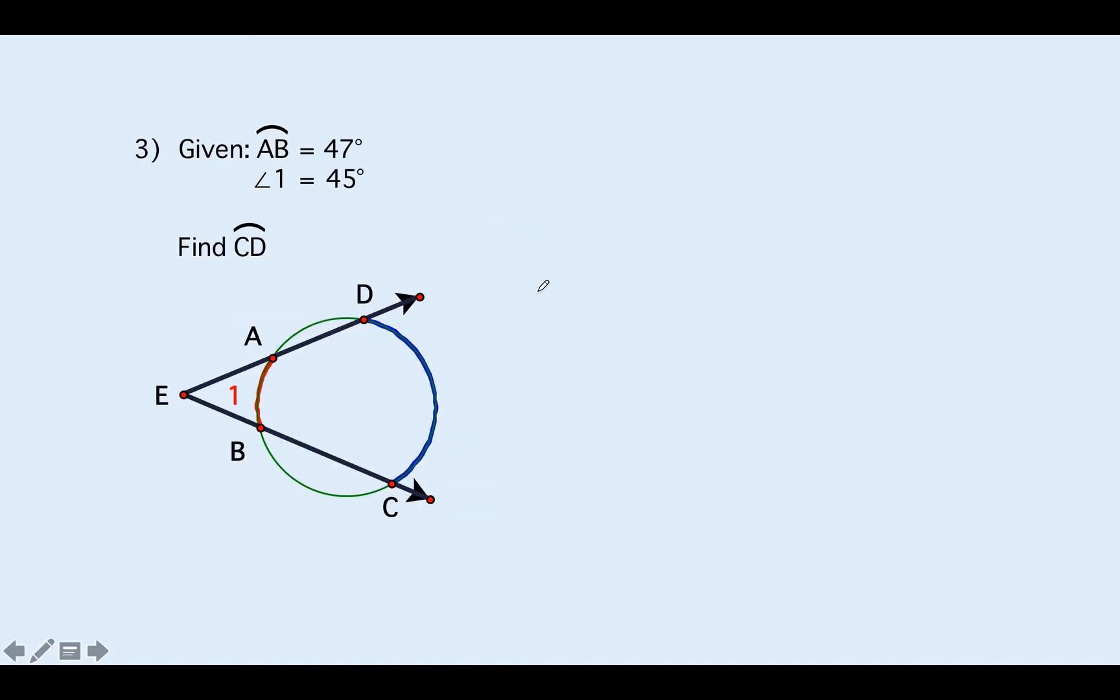Next example, hit pause, see what you come up with. First thing is we should always write formulas. Angle one is equal to one half of arc CD, the bigger one, minus the little one which is AB. And then we're going to fill in. Remember, arc measurements go in here, angles go over here. So AB is 47. So it sets up a little different, that's okay. We're just looking for a different portion of the problem.